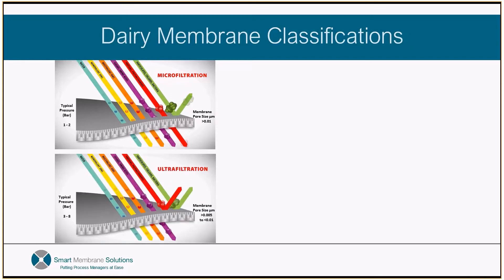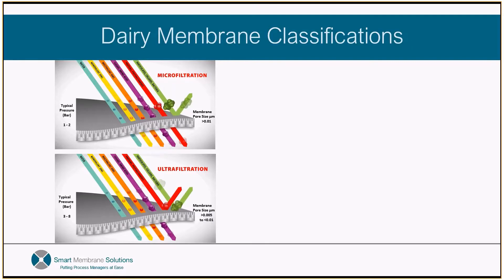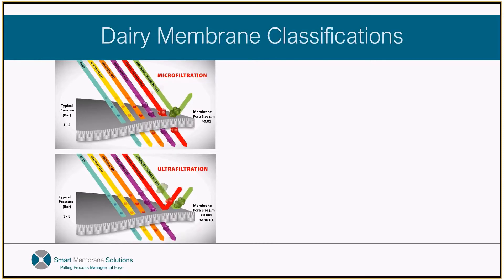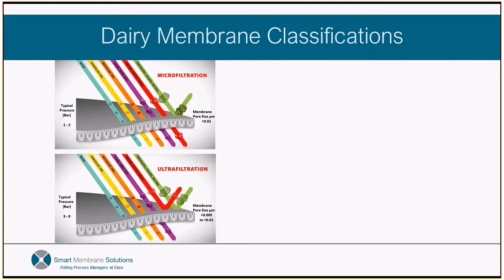Next up, we have ultrafiltration, which has smaller membrane pores than MF. Ultrafiltration can reject components much smaller than 0.1 micron. And in dairy, this includes rejection of all milk proteins as well as fat and bacteria as per microfiltration. UF applications include protein concentration, standardisation and purification through the removal of the milk sugar, known as lactose, and this is by far the most common dairy application.